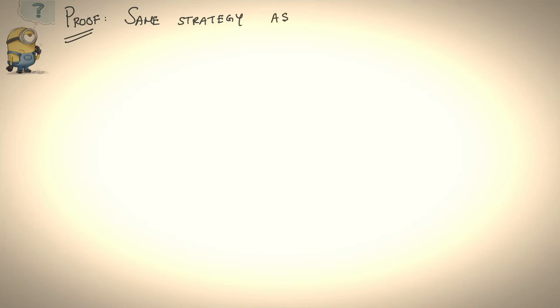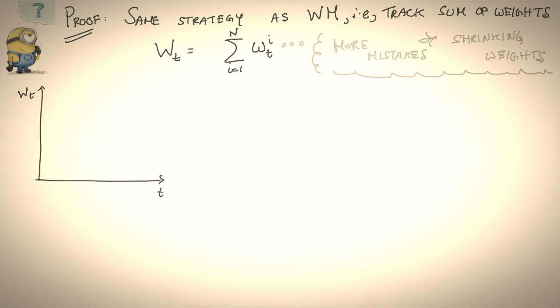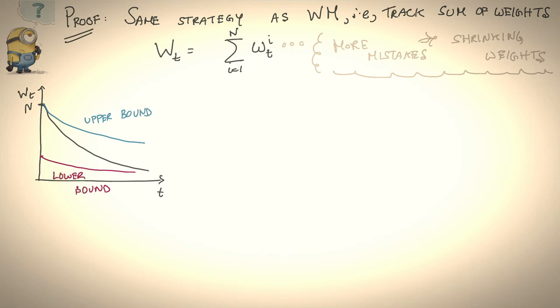Let's briefly look at the proof for generalized weighted majority. The proof strategy is the same we've been using for weighted majority and randomized weighted majority: track the sum of weights over time. The intuition is that the sum of weights is indicative of how many mistakes the learner makes — the more mistakes, the faster the weights shrink. The sum of weights begins at t=0 with n and decays over time, and we try to upper and lower bound this sum. The lower bound corresponds to the best expert; the upper bound corresponds to the mistakes the learner makes.